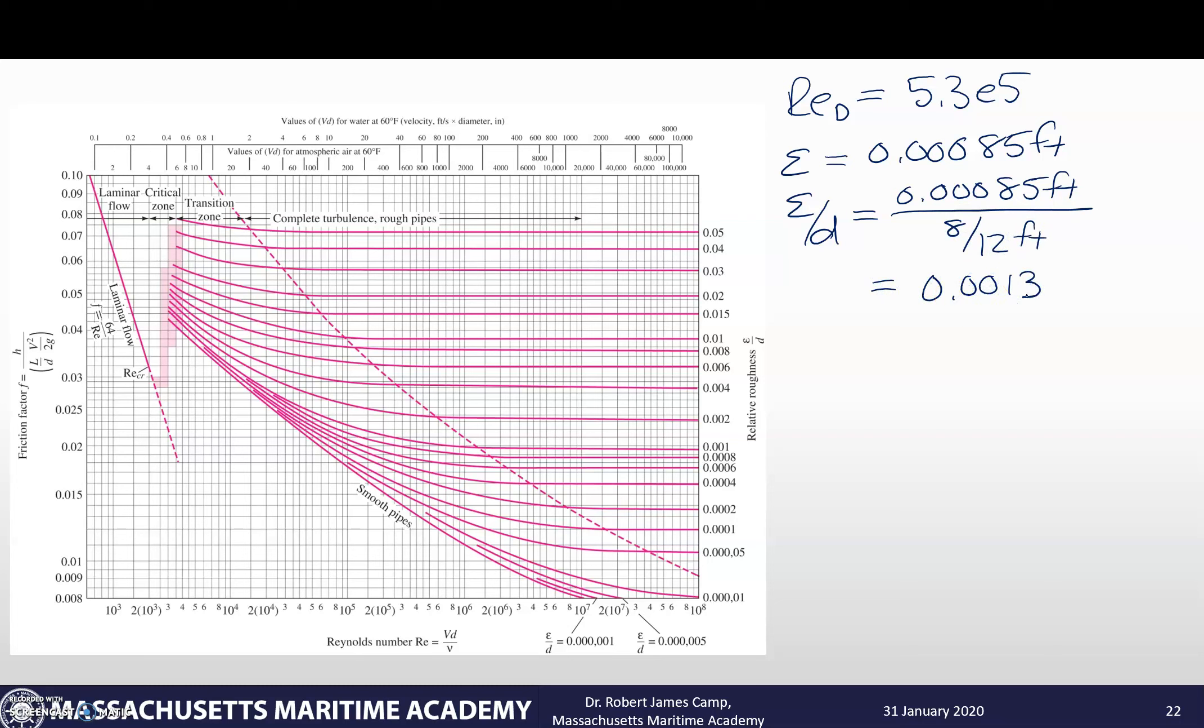So we take a look at things. And I have my Reynolds number 5.3 times 10 to the fifth. So that's going to be pretty close to this line here. And then 0.013. Now here's 0.01. There's 0.02. So it's about a quarter of the way between those two. So it's probably right about there. And so if I look at that, we're looking right about an f value of 0.021.